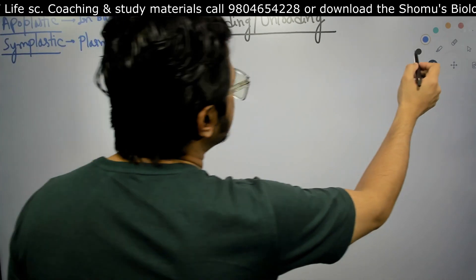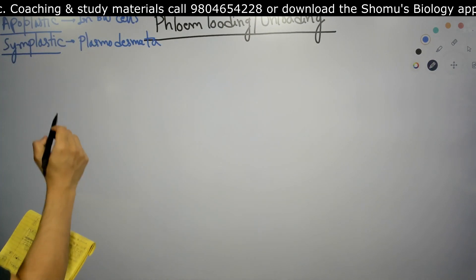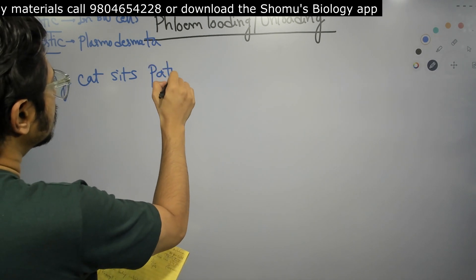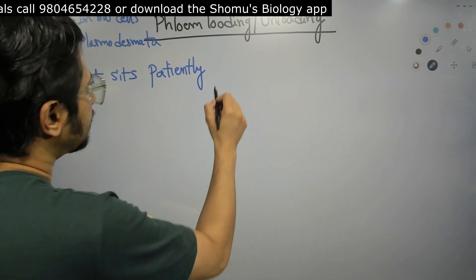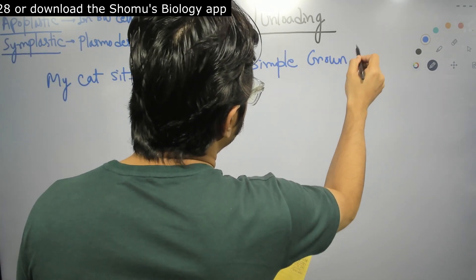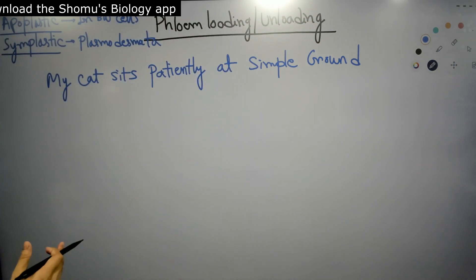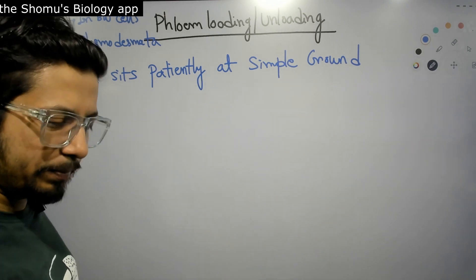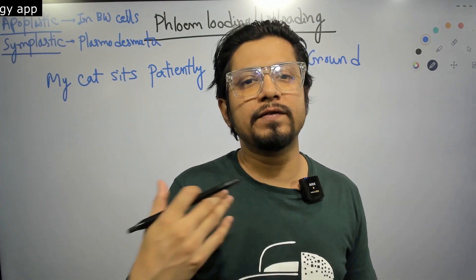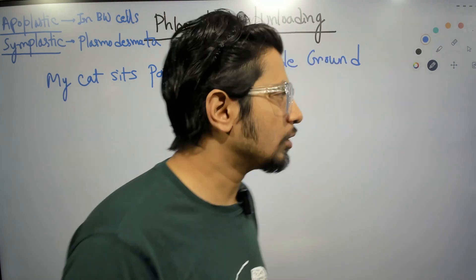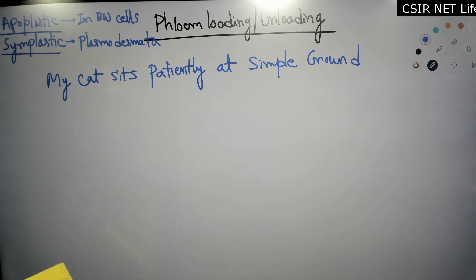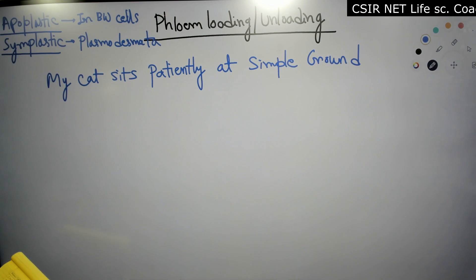Now let's move to phloem loading. We have two different sentences to remember. The first is: 'My cat sits patiently at simple ground.' Imagine a ground which is simple, the grasses are trimmed, and your cat is sitting there quietly. The second sentence will come shortly. These mnemonics require your imagination skills, so picture your cat sitting very patiently and quietly on that simple ground.